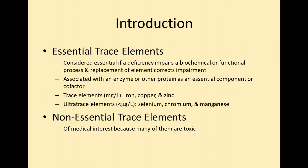For example, we have the essential and non-essential amino acids when we talk about proteins. These are elements we need to have, usually associated with some type of enzyme, another protein, or an essential cofactor. The trace elements are found in such small quantities in the human body that we use milligrams per liter, not milligrams per deciliter — so there's a lot less of it than other things we test for.